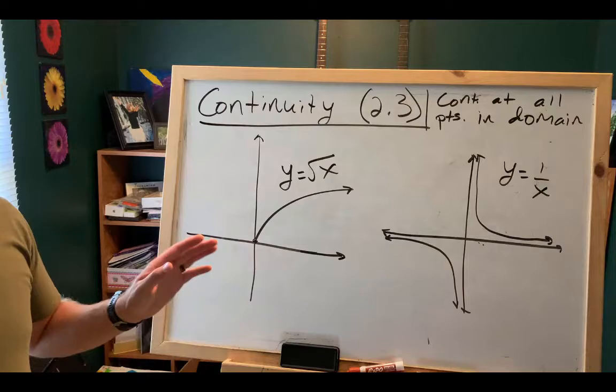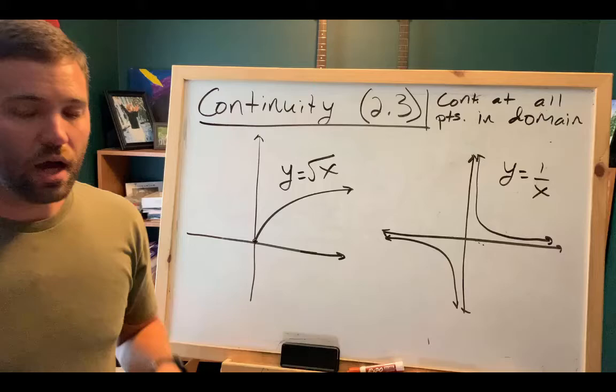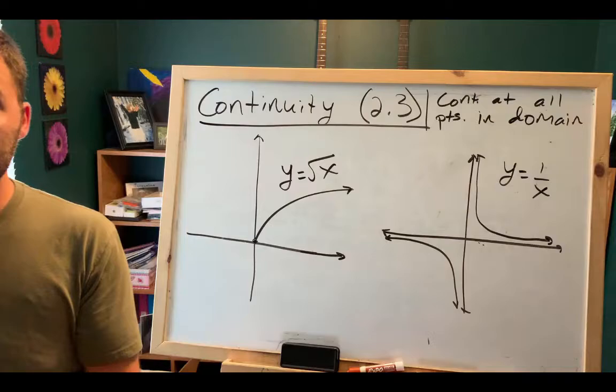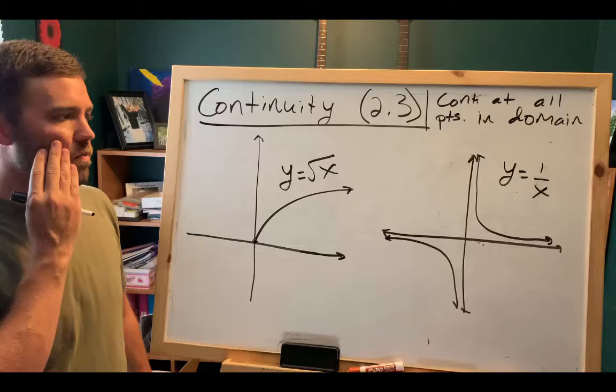Now I want you to think about this function — y equals 1 over x. Is y equals 1 over x a continuous function? A lot of students will say no, 1 over x is not a continuous function. And I'll ask why, and they'll say, well, because at x equals 0, there's a vertical asymptote there — there's a discontinuity.